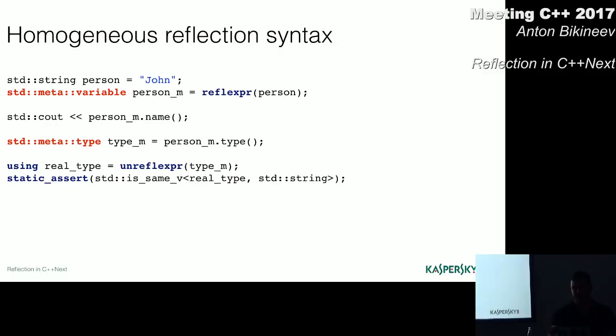So I assume we can just omit the constexpr keyword for meta objects. In the same fashion, we can reflect the name of the variable, the type of the variable, and the real type of the variable. For a type meta object, please notice that unreflexpr, if we pass a type meta object to unreflexpr keyword, it might be used as a type specifier.